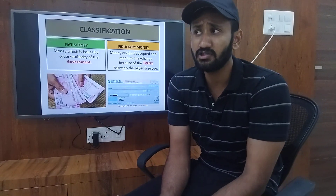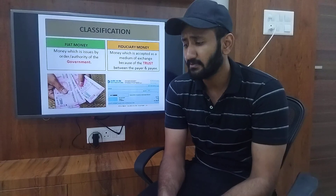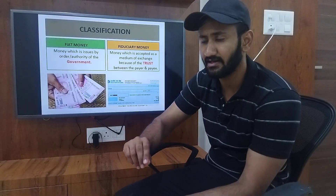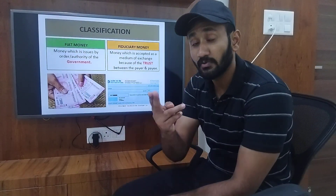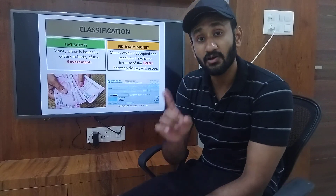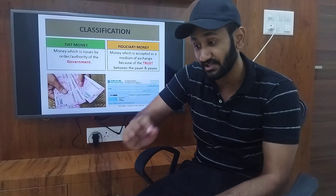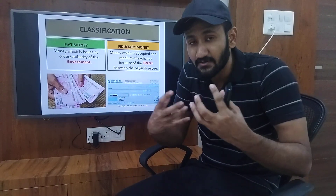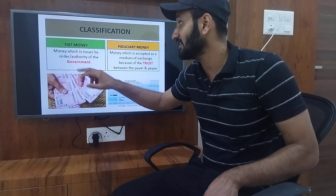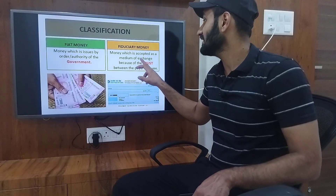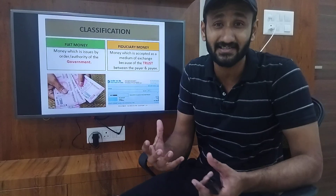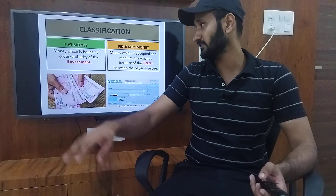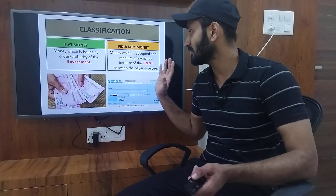The second type of money is fiduciary money. Let's say you went to buy a bike or an Activa, and you didn't have cash. You must have seen your father or guardian write a cheque — writing one lakh rupees on it and giving it. They take it, go to the bank, and get the money. So that cheque is your fiduciary money. It is not issued by the authority of government, but the payee is bound to accept it because of the trust between the payer and payee — the trust that depositing this cheque will get me money.